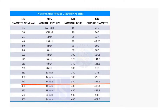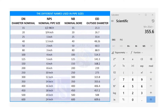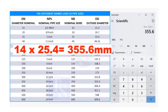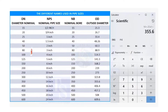Now, check the OD of a 14 inch pipe. 14 multiplied by 25.4 is 355.6 millimeters.